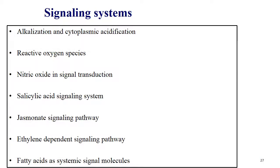In the signaling system there are mechanisms including alkalization and cytoplasmic acidification, reactive oxygen species, nitric oxide in signal transduction, salicylic acid signaling system, jasmonic acid pathway, ethylene-dependent signaling pathway and fatty acids as systemic signal molecules.